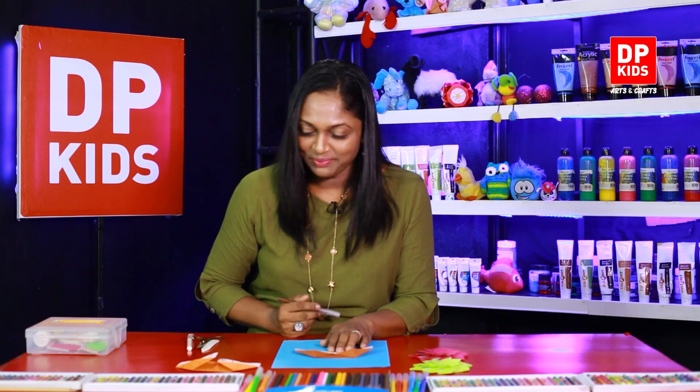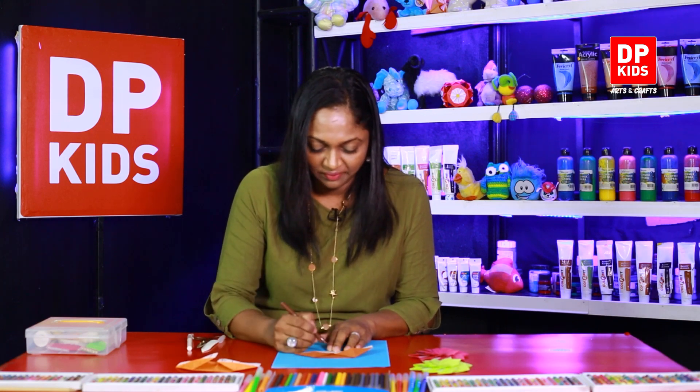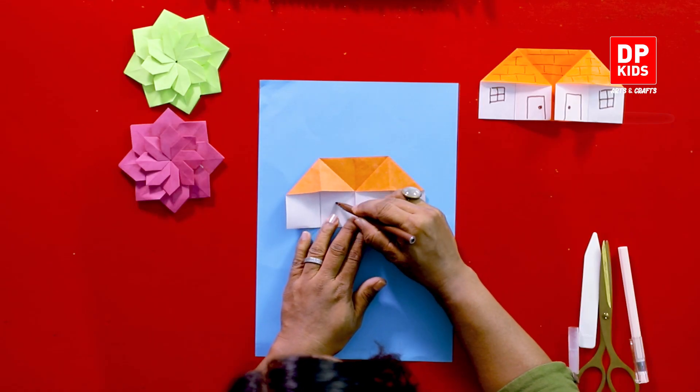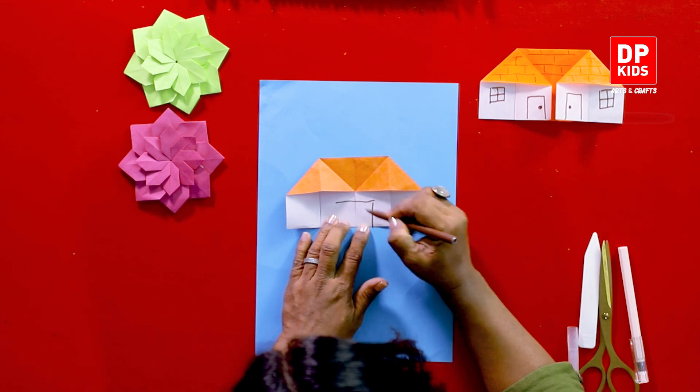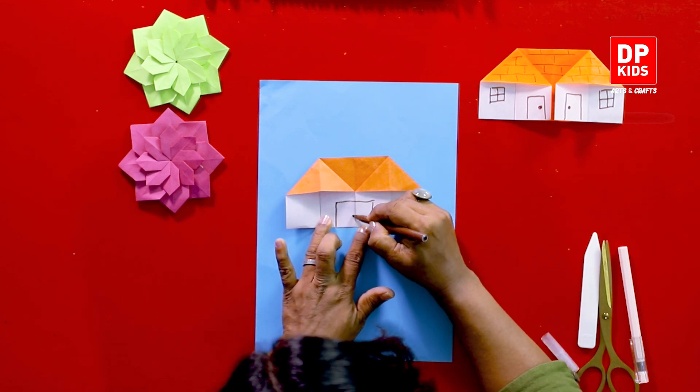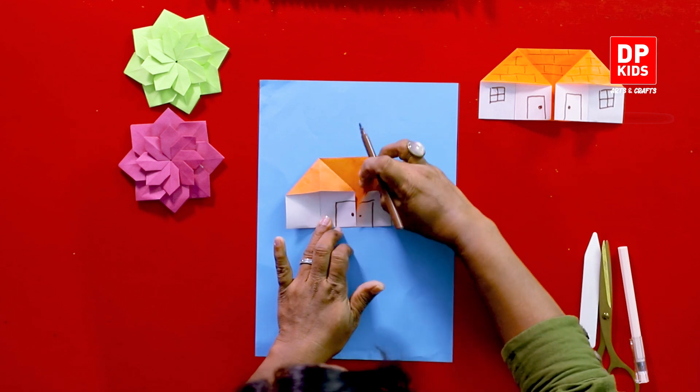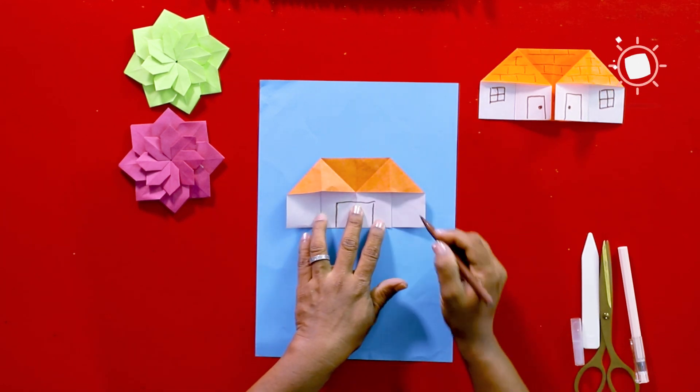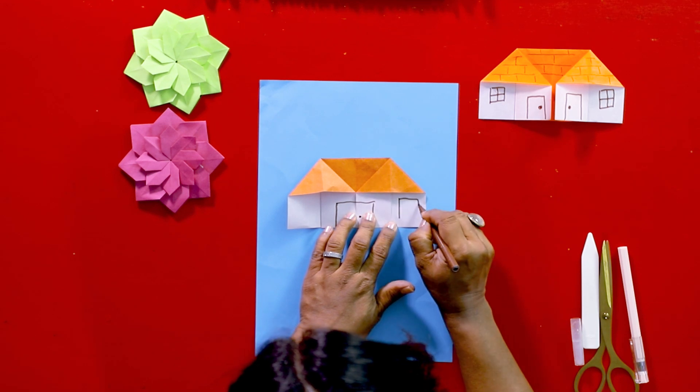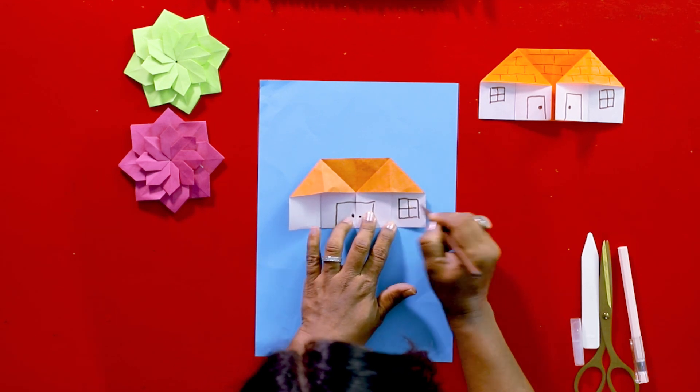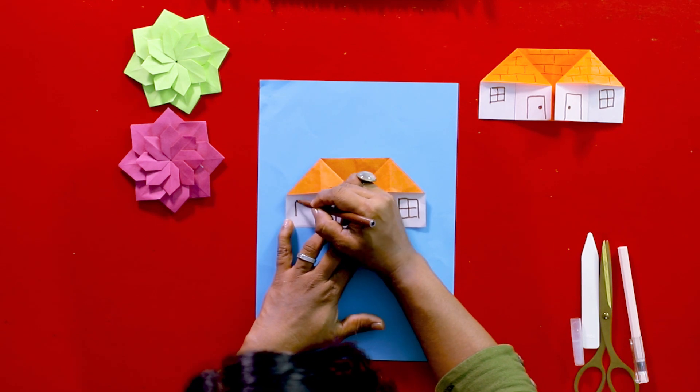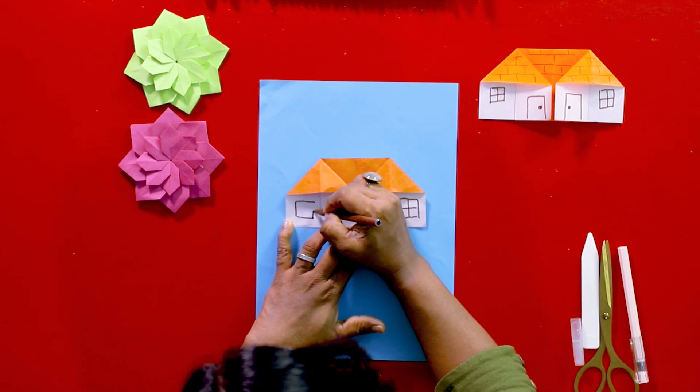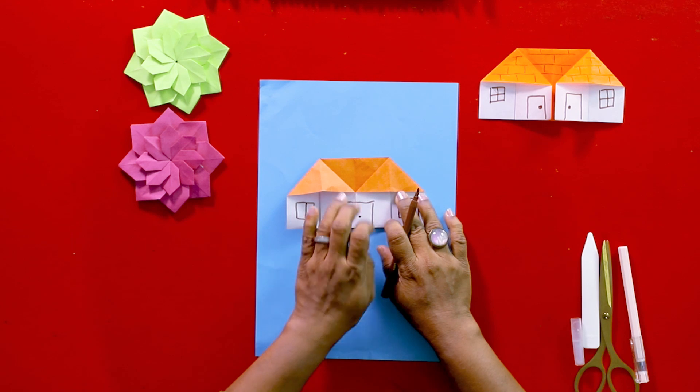So now our house has to have doors and windows, okay? So first you can have a single door like this that opens up like that. And here's my window and my other window on this side. I know y'all can do this perfectly.